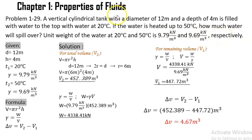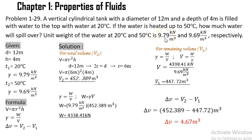First, we are going to identify our given. The diameter of the vertical cylindrical tank is 12 meters and its height is 4 meters. And if the water is at 20 degrees Celsius, it has a specific weight of 9.79 kN per meter cube.